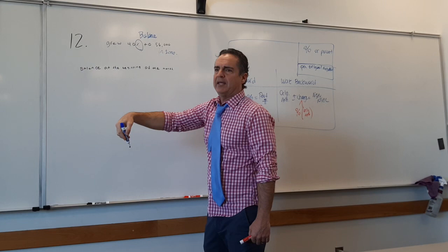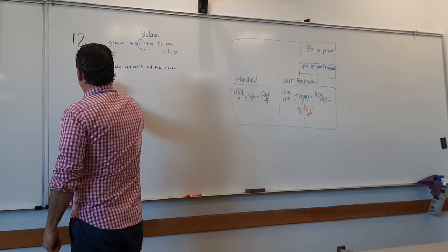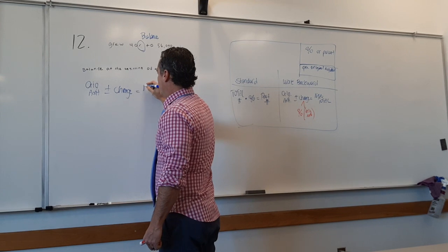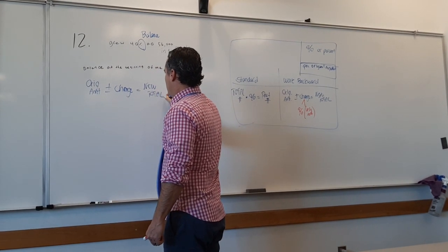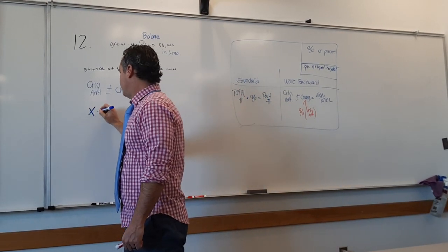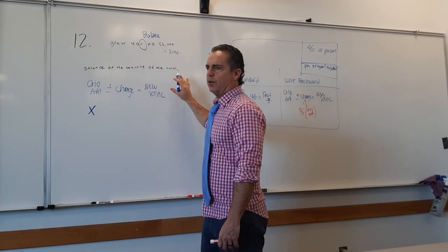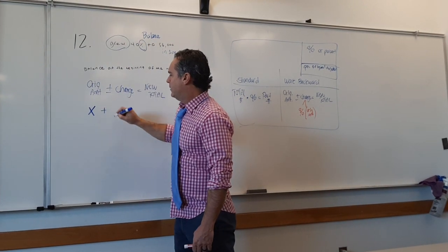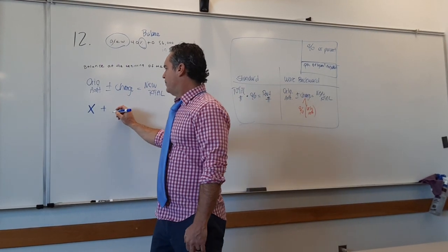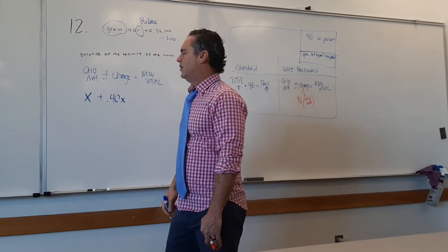We know the end amount, we're going back to find the beginning amount. So we take: original amount plus or minus a change equals a new total. The original amount is x — we don't know it. Are we adding or subtracting? The word 'grew' tells us it's an add. And we're changing this by 40%, so we write 0.4x. Very good — I'm so grateful you said x at the end of that. We're not adding 40 cents; it's 40% of x.